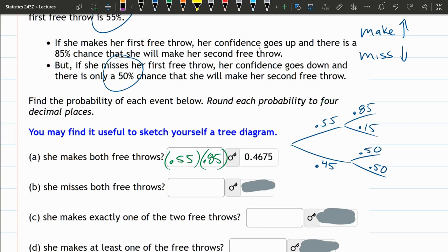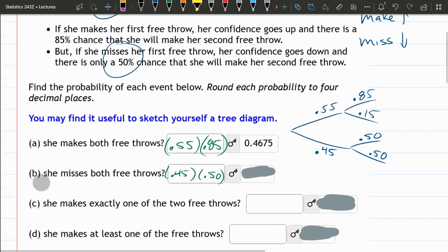Missing both is similar. It's going down, down: .45 times .5. You don't need the extra zero. That's missing both.